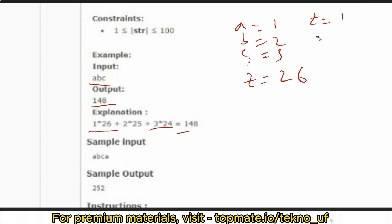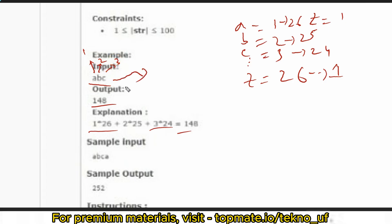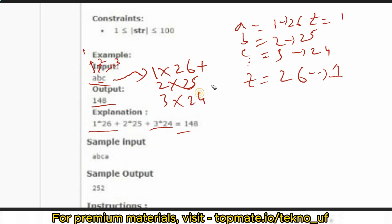You have to reverse the alphabetical order, so for 'z' you place 1, for 'a' you place 26, for 'b' 25, for 'c' 24, and so on. Then for each character, multiply its position number by its reversed alphabetical order value. So: 1×26 + 2×25 + 3×24 = 148.